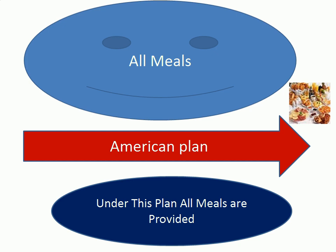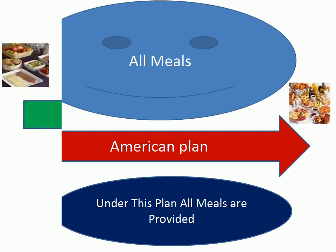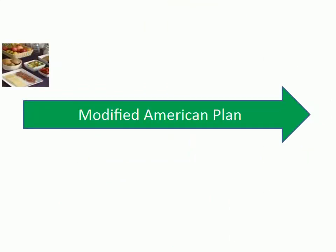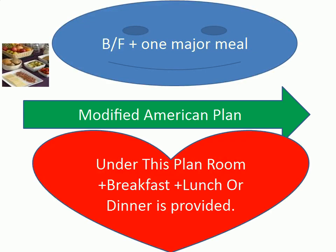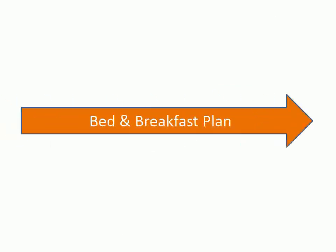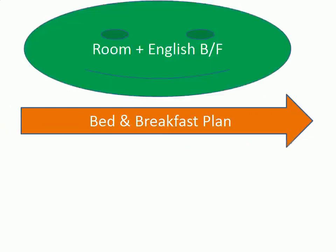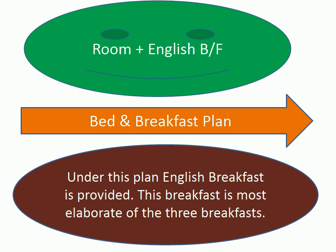American Plan — All meals. Under this plan, all meals are provided. Modified American Plan — Breakfast plus one major meal. Under this plan, room plus breakfast plus lunch or dinner is provided. Bed and Breakfast Plan — Room plus English breakfast. Under this plan, English breakfast is provided, which is the most elaborate of the three breakfasts.